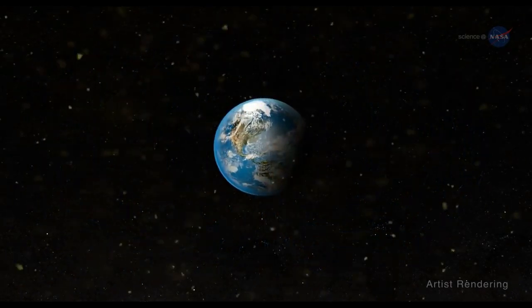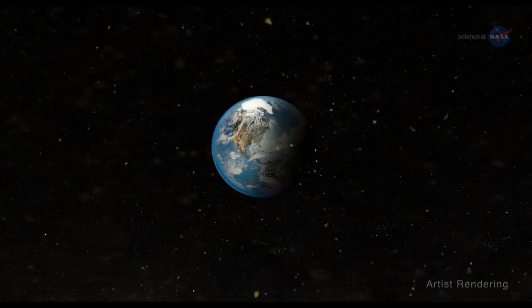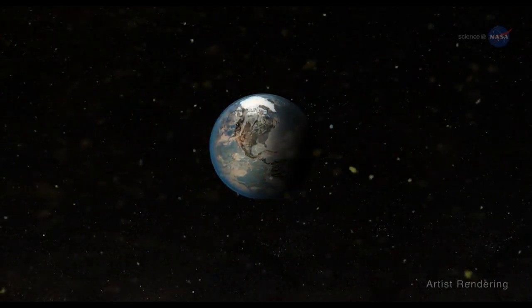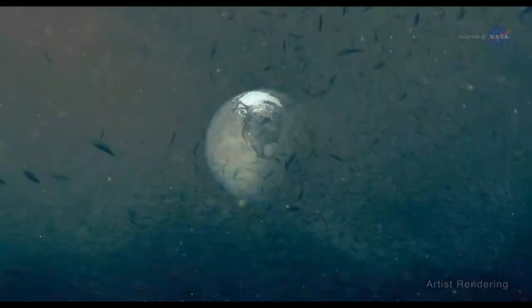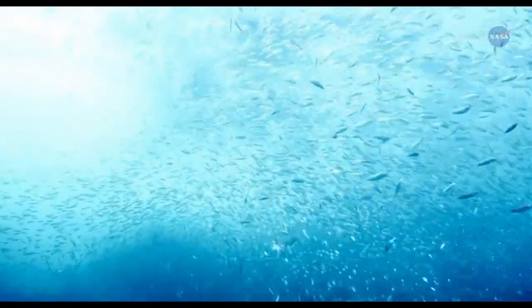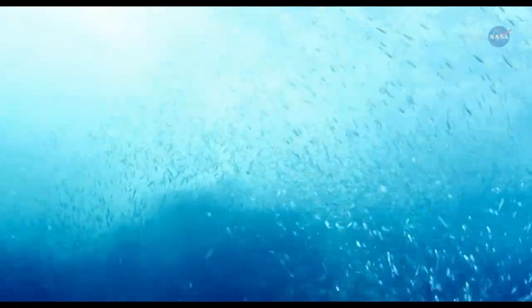Without the magnetosphere, the relentless action of these solar particles could strip the Earth of its protective layers, which shield us from the Sun's ultraviolet radiation. It's clear that this magnetic bubble was key to helping Earth develop into a habitable planet.